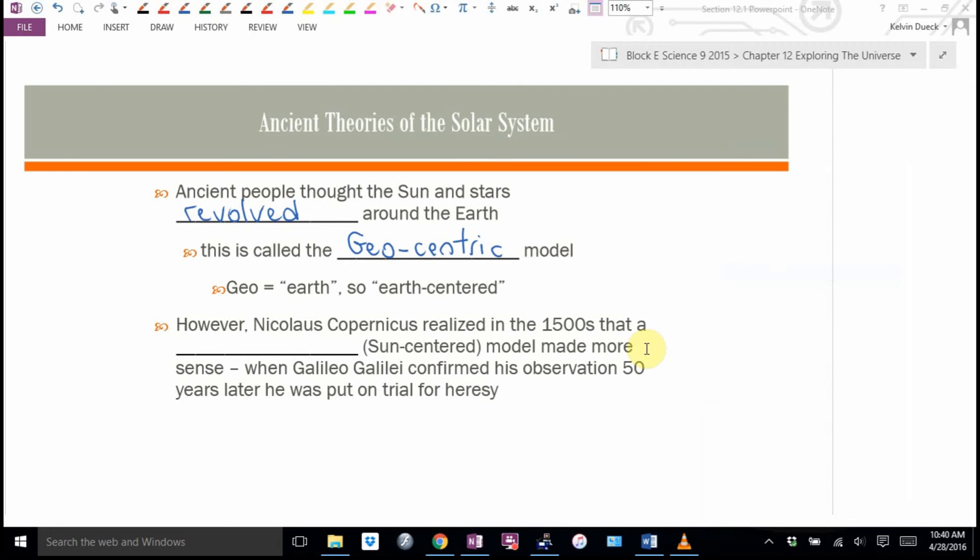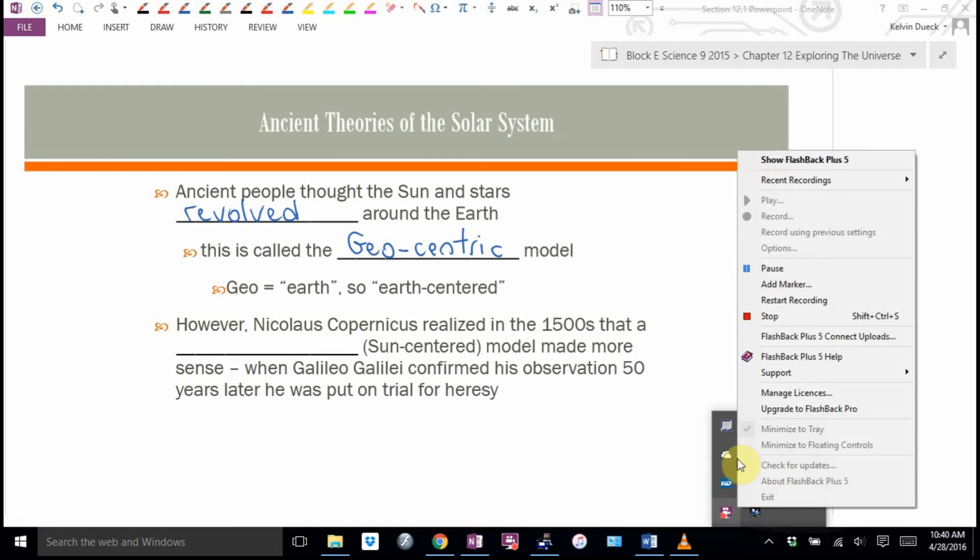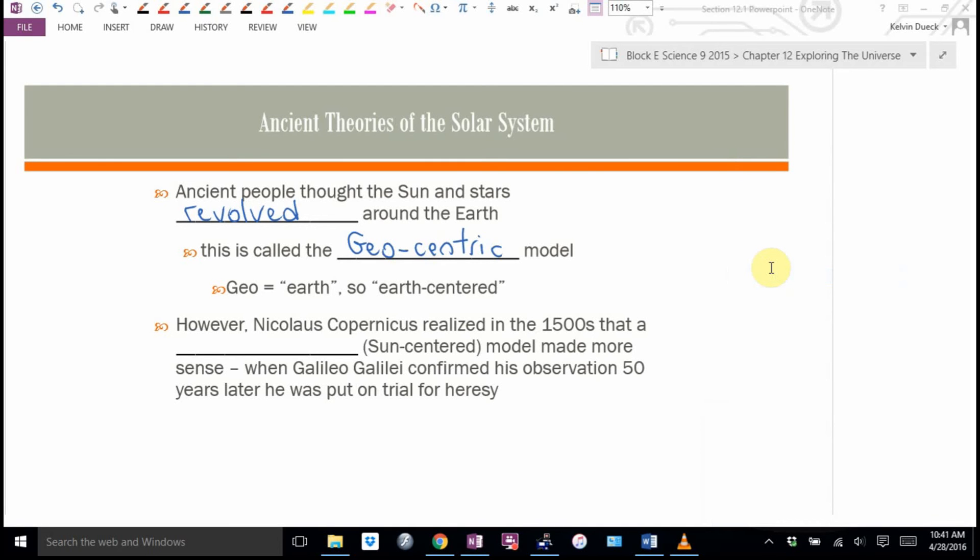Nicholas Copernicus realized in the 1500s that a sun-centered model made way more mathematical sense. What's the word for sun-centered? Sun-centered is called heliocentric. Helio means sun. In fact, it's where the word helium comes from. The first time that we found helium was looking through a spectroscope at the sun. We said, there's an element there we don't realize. It's the sun element. We didn't know helium was on the Earth, too.